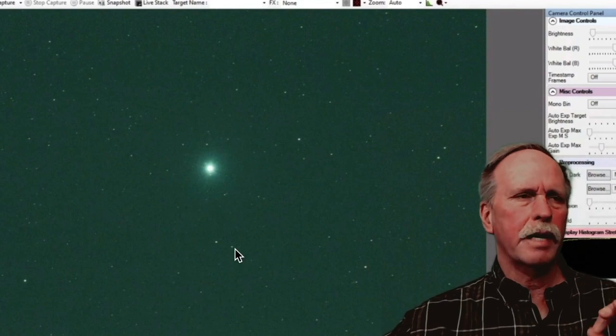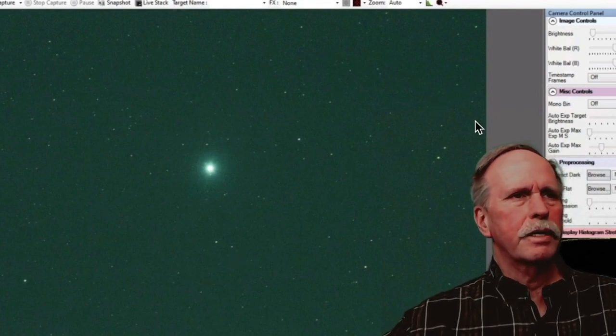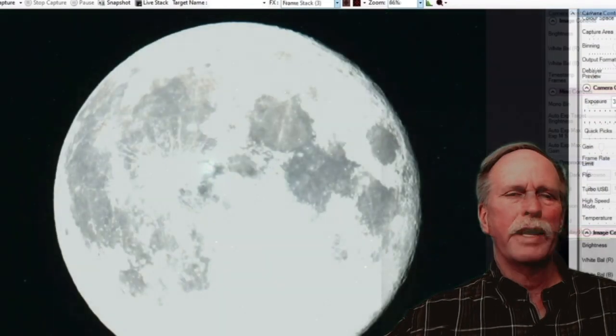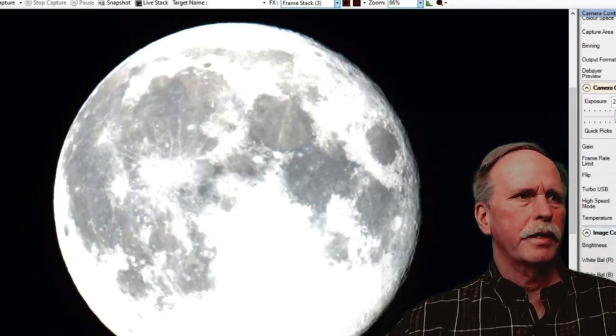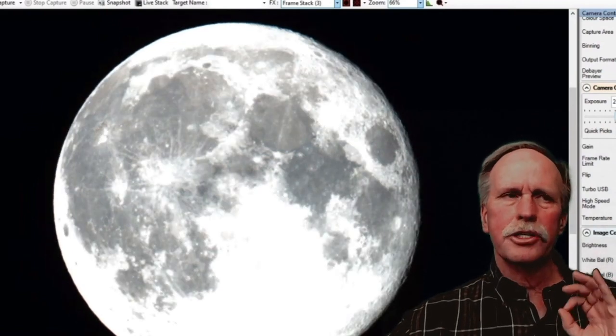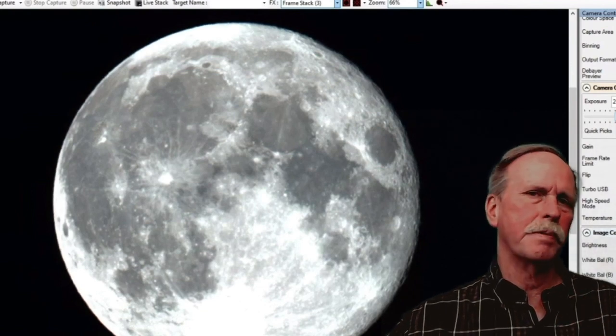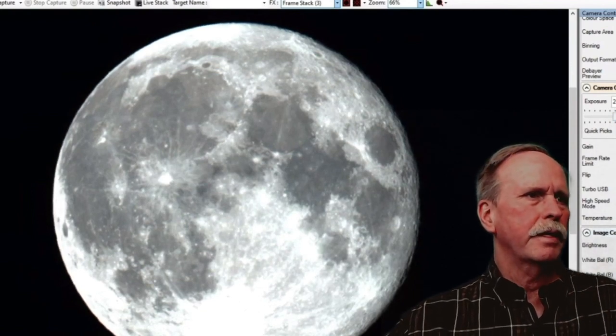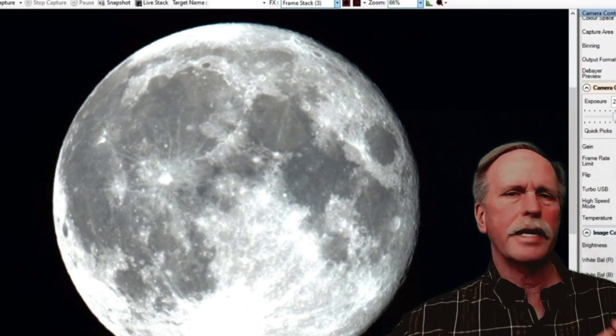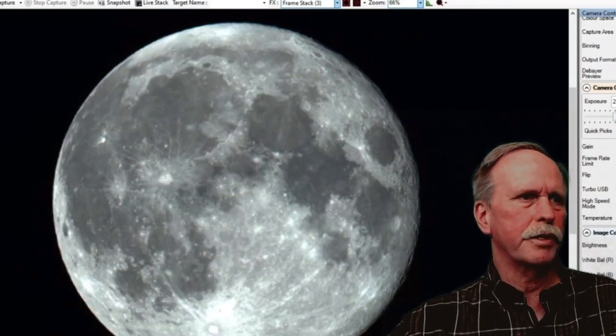So now we're polar aligned. We've got our camera in tight focus. Let's go ahead and do some observing. We have a beautiful full moon tonight. As you can tell the moon is extraordinarily bright. So we need to make some adjustments on the exposure length and the gain and look at some contrast and see if we can bring out some details of that full moon.